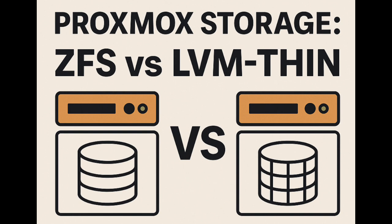Silent data corruption isn't like when a file obviously breaks and gives you an error — it's insidious. It's when your data subtly changes, maybe a bit flips on your drive or there's a glitch in memory, but there's no warning at all. This can cause really weird problems down the line: apps misbehaving, maybe even your whole OS getting unstable. ZFS fights this by calculating checksums — little digital fingerprints — for all your data and metadata. When you read data back, ZFS recalculates and compares. If they don't match, it knows corruption has happened. And if you've set up redundancy like mirroring, ZFS can often automatically heal the corruption using a good copy.